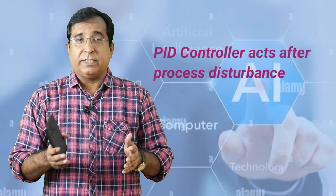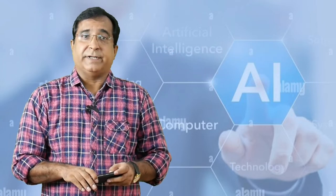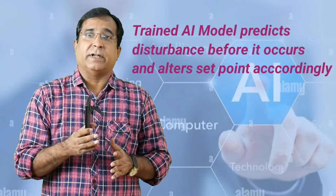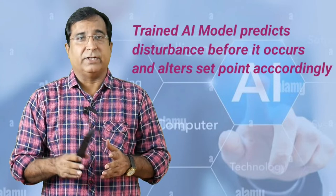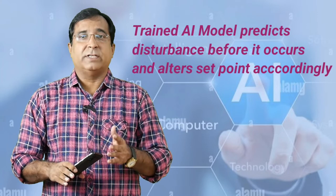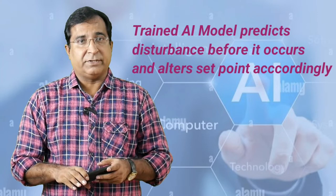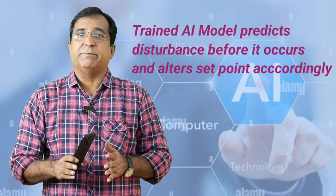But trained AI model already has the learned behavior of current change due to ambient temperature variation. Because of this as soon as the AI model detects change in ambient temperature it starts changing set point of PID controller in anticipation learned from past historical data that how temperature affects output current and takes care of situation before the disturbance occurs to the process. Now you can observe here it is a predictive approach.